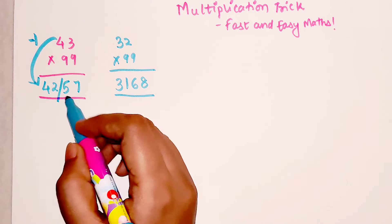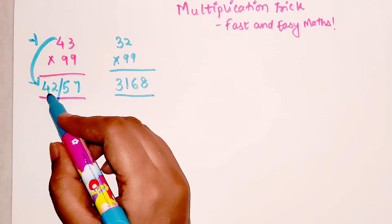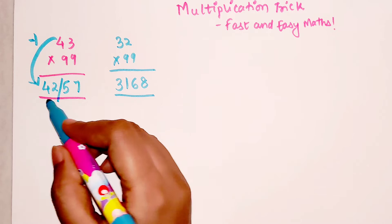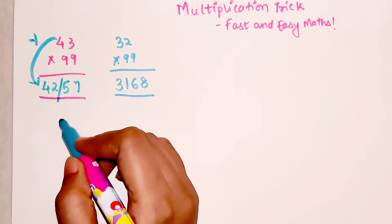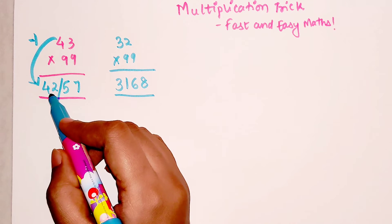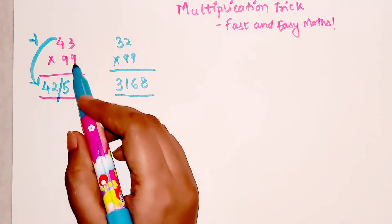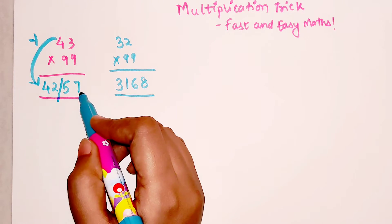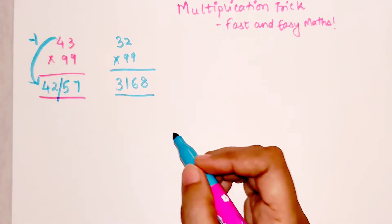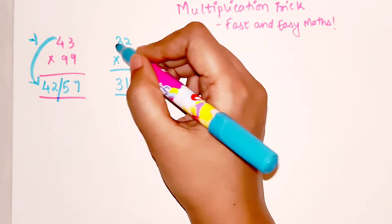So 43 minus 1 gets you 42. And then the rest of the digits are nothing but what number you should add to 4 to get 9. So I should add 5 to 4 to get 9. Similarly, I will add 7 to 2 to get 9.